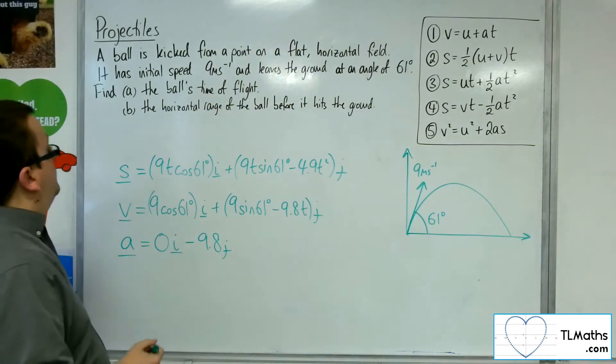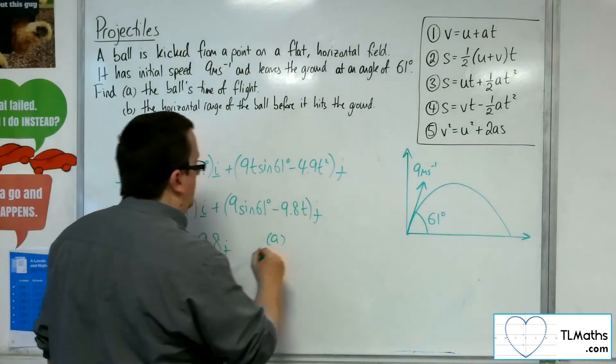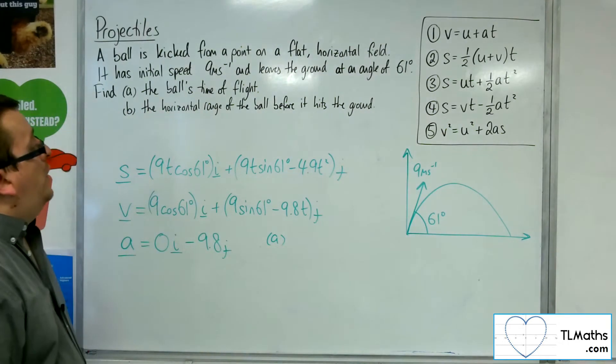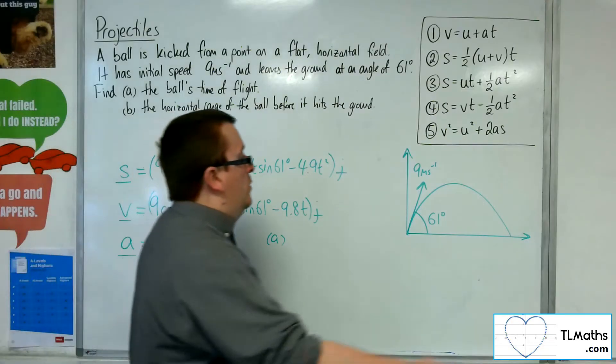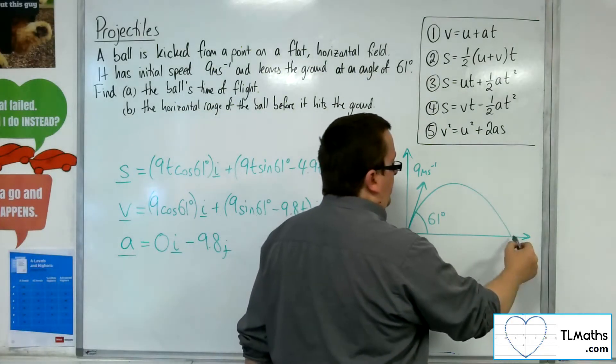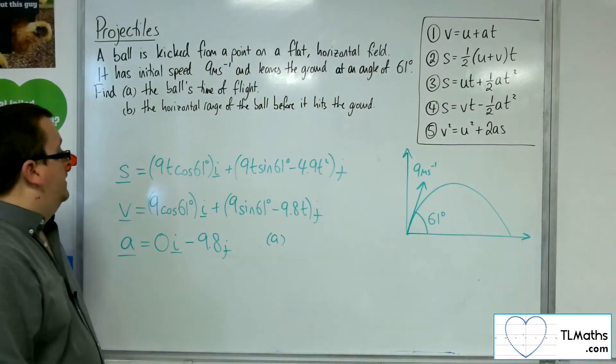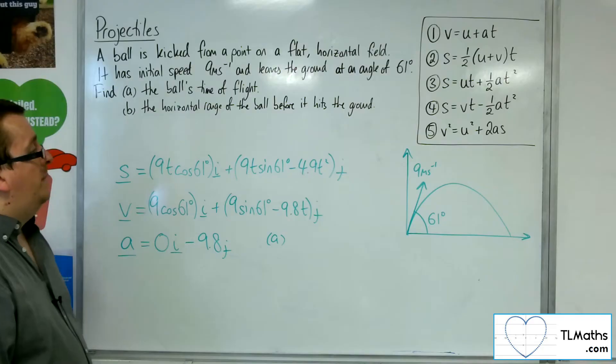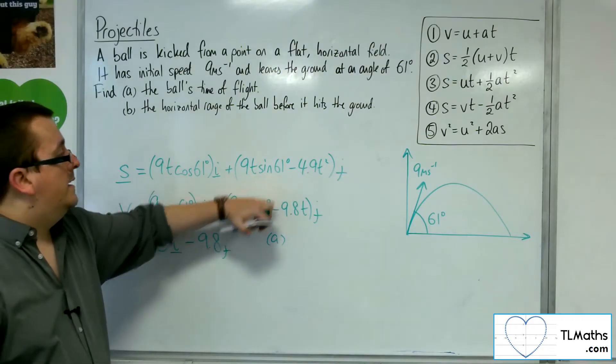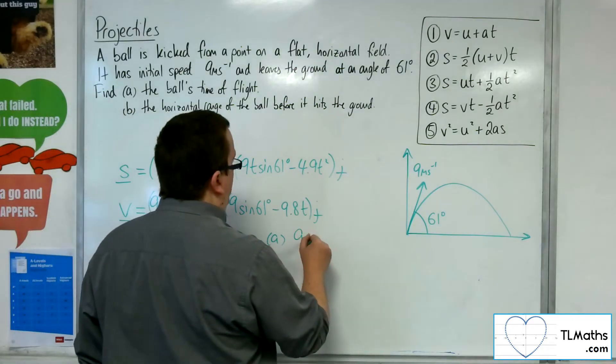Now, find the ball's time of flight. So this is how long it's taken in order for the vertical component to become 0 again. The vertical component of the displacement is this one here, and I want that to be equal to 0.